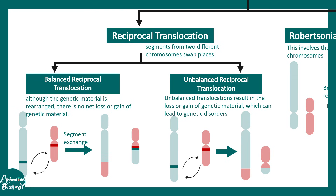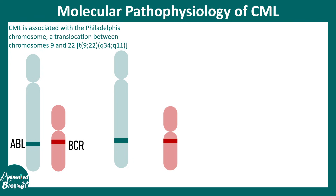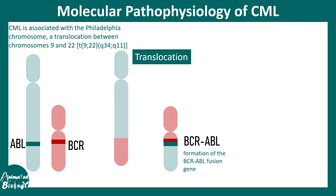Each of these kinds of translocations is associated with many disease pathologies. One great example of balanced translocation comes from the Philadelphia chromosome, which is the underlying pathology of CML. In this case, the translocation happens between chromosome 9 and 22, and you can see the segment exchange happens, producing the BCR-ABL fusion gene.